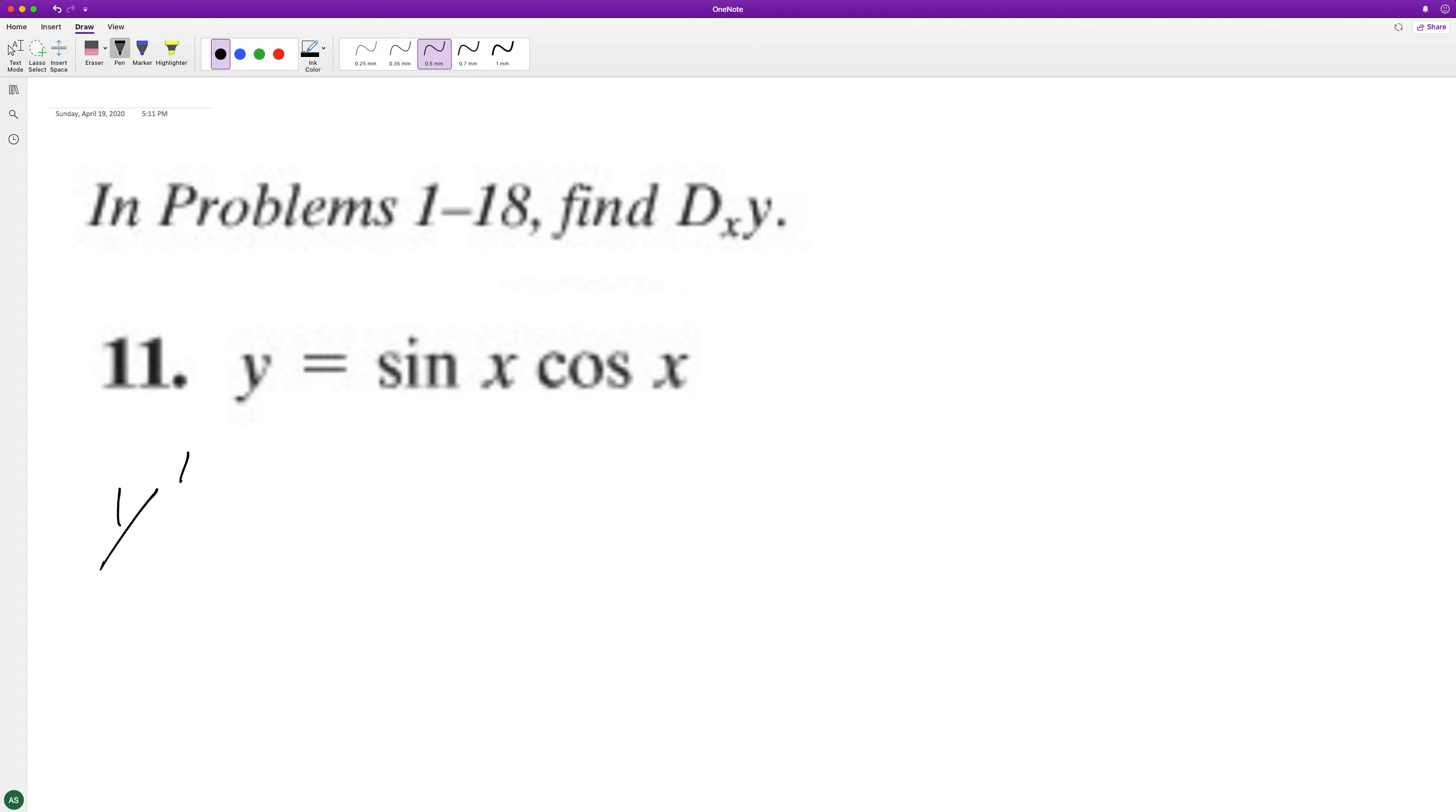So we're going to use the product rule here. Y prime is going to be equal to the derivative of sine of x times cosine of x plus sine of x times the derivative of cosine of x.